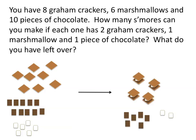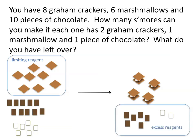You'll see that we can make four s'mores and we have six pieces of chocolate left over and two marshmallows left over. That makes the graham crackers the limiting reagent — the reactant that we ran out of first and which limits the amount of s'mores that can be made. The chocolate and the marshmallows are both excess reagents because we have extra of each of those.